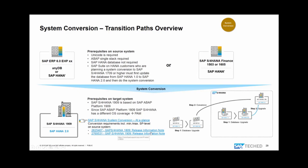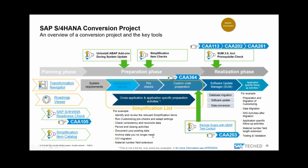A system conversion project involves a planning phase, preparation phase, and realization phase. The realization phase uses the Software Update Manager (SUM). Several sessions are available: CA113, CA202, and CA261 cover the Software Update Manager; for custom code preparation, there's hands-on session CA364 and lecture session CA203. Other tools supporting the preparation phase include the Transformation Navigator, the SAP Activate roadmap, the readiness check, and the simplification catalog — all with hyperlinks for more information. There's also a dedicated session for the readiness check at TechEd.